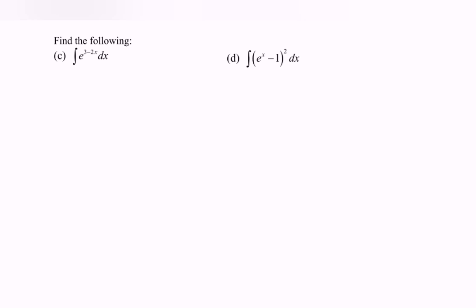Next we have question c: integrate e to the power of 3 minus 2x with respect to x. Kindly focus on the power — differentiate the situation — and we will have negative 2. So the result is e to the power of 3 minus 2x over negative 2, plus c.